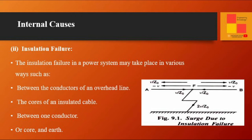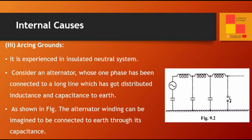Insulation failure can be defined as: the insulation failure in a power system may take place in various ways, such as between the conductors of an overhead line, the cores of an insulated cable, or between one conductor or core and earth. Arcing grounds can be defined as: it is experienced in an insulated neutral system. Consider an alternator whose one phase has been connected to a long line which has distributed inductance and capacitance to earth. The alternator winding can be imagined to be connected to earth through its capacitance, as shown in the figure.